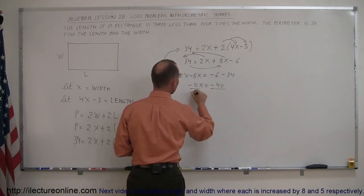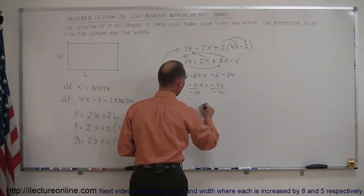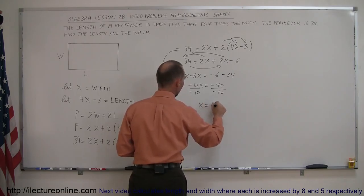And then, dividing both sides by the numerical coefficient in front of the x, which is minus 10, we get x is equal to a positive 4.